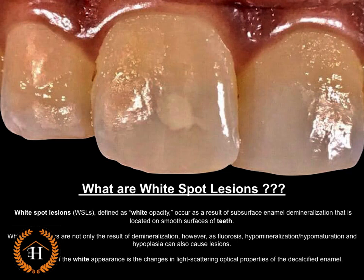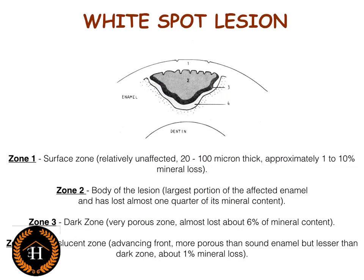The reason they appear white is because of the optical properties of the decalcified enamel, which get changed and light scattering happens. Histologically, it's comprised of four zones. The first zone is relatively unaffected, loses about 1 to 10 percent of minerals, and is about 20 to 100 microns thick. The second is the active body of the lesion — the largest portion of affected enamel — and has lost more than one quarter of mineral content. The third is the dark, very porous zone, which loses about 6 percent of mineral content. The last is the translucent zone — though it's the advancing front, it is more porous than sound enamel but lesser than the dark zone.